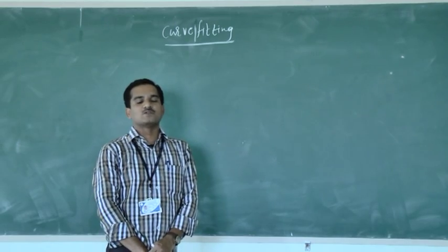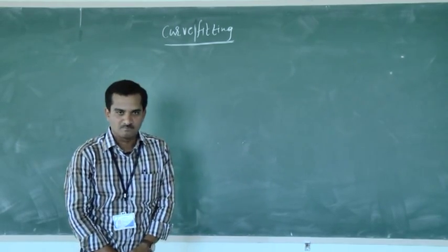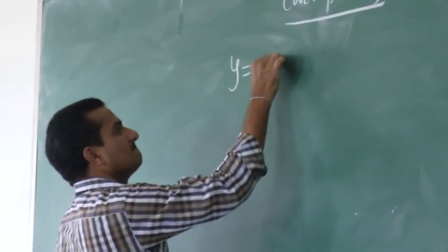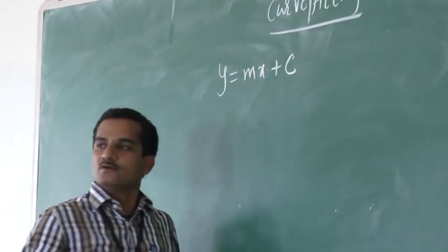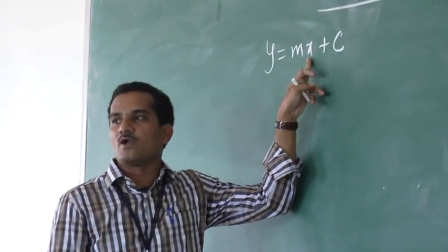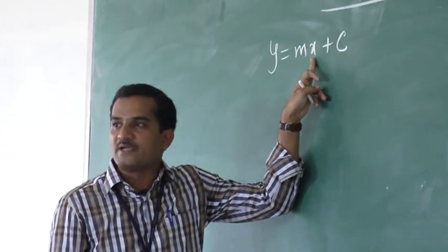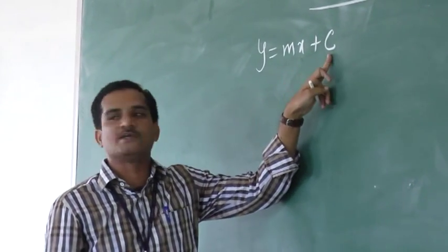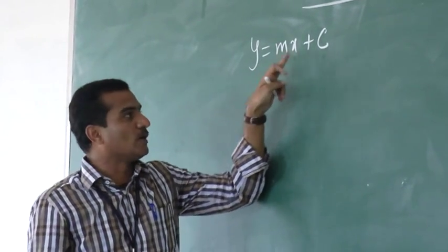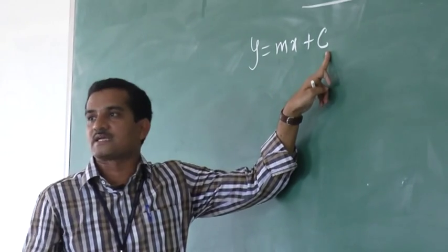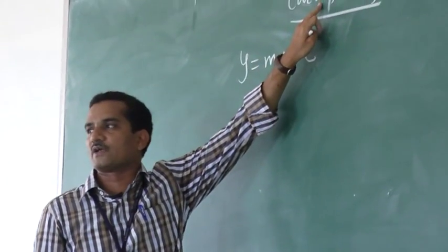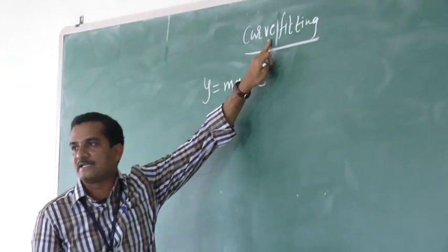The straight line is Y = MX + C, where Y is called the dependent variable, X is called the independent variable, and M and C are unknown constants. Calculating the values of M and C and constructing the line itself is known as fitting of a curve, or curve fitting.